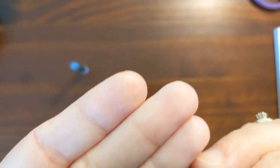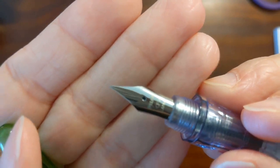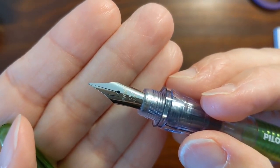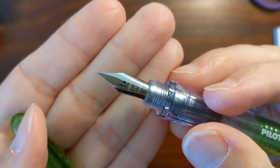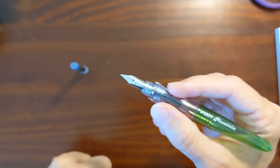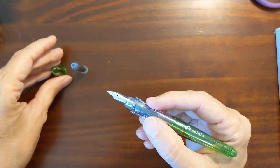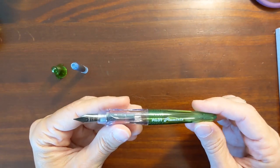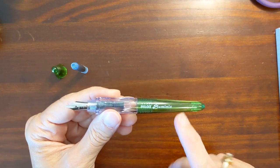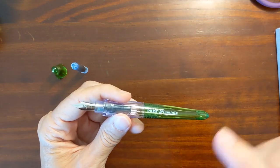The nib does not have any tipping but it's marked fine and you can see that it's a fine stub nib. That's what excited me about this pen the most. I'm normally not a big fan of the Pluminix but something about this being a pocket pen kind of caught my interest.